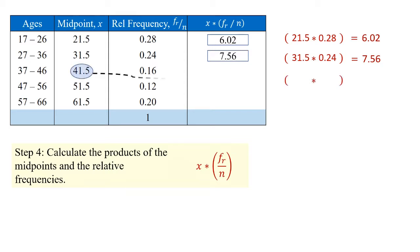The next category or group, midpoint value of 41.5, we multiply this times 0.16. 16% of the entire sample is aged between 37 and 46, and this gives us a total of 6.64.